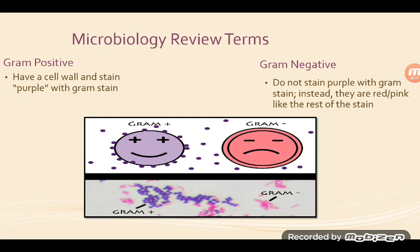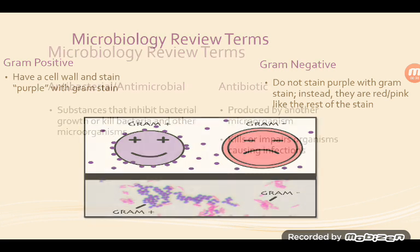Microbiology review terms include gram positive and gram negative organisms. Gram positive have a cell wall and stain purple with a gram stain. Gram negative do not stain purple with a gram stain; instead they stay reddish pink like the rest of the stain.